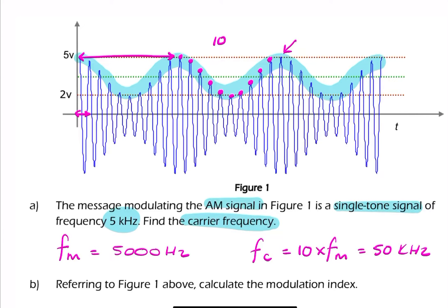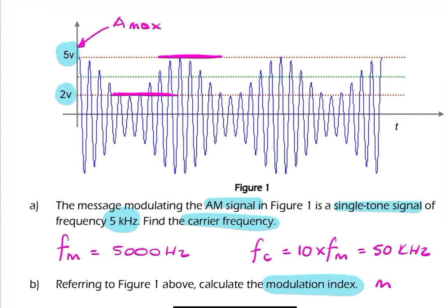Now, the next part of the question says find the modulation index. So we're trying to find the depth of modulation, m. Finding the modulation index, we're no longer interested in frequencies, we're interested in amplitudes. So we're interested in the depth of modulation, we're interested in particular in these two numbers. We're interested in the maximum amplitude and the minimum amplitude.